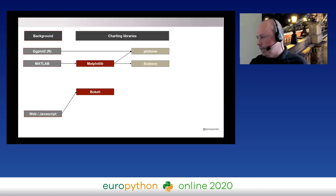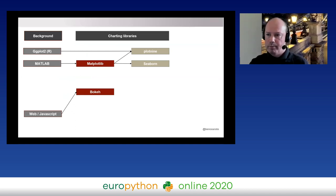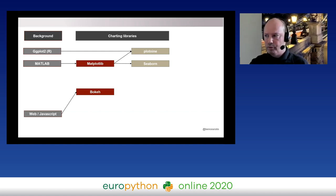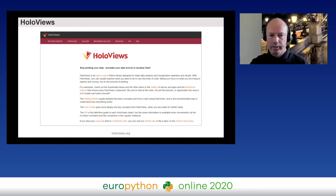I'll share the Google Colab notebook with all example charts so you can try the interactive features yourself after the presentation. Looking at our updated map: we now have Bokeh as a second core low-level library — and just as with Matplotlib, there are of course higher-level wrapper libraries for Bokeh as well.